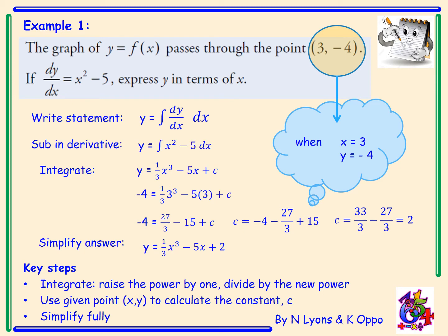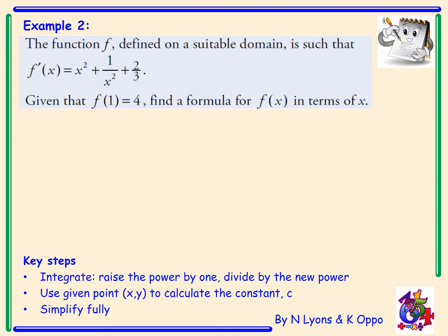Let's try another example. Example 2. The function f, defined on a suitable domain, is such that f'(x) equals x squared plus 1 over x squared plus 2 thirds. Given that f(1) equals 4, find a formula for f(x) in terms of x.